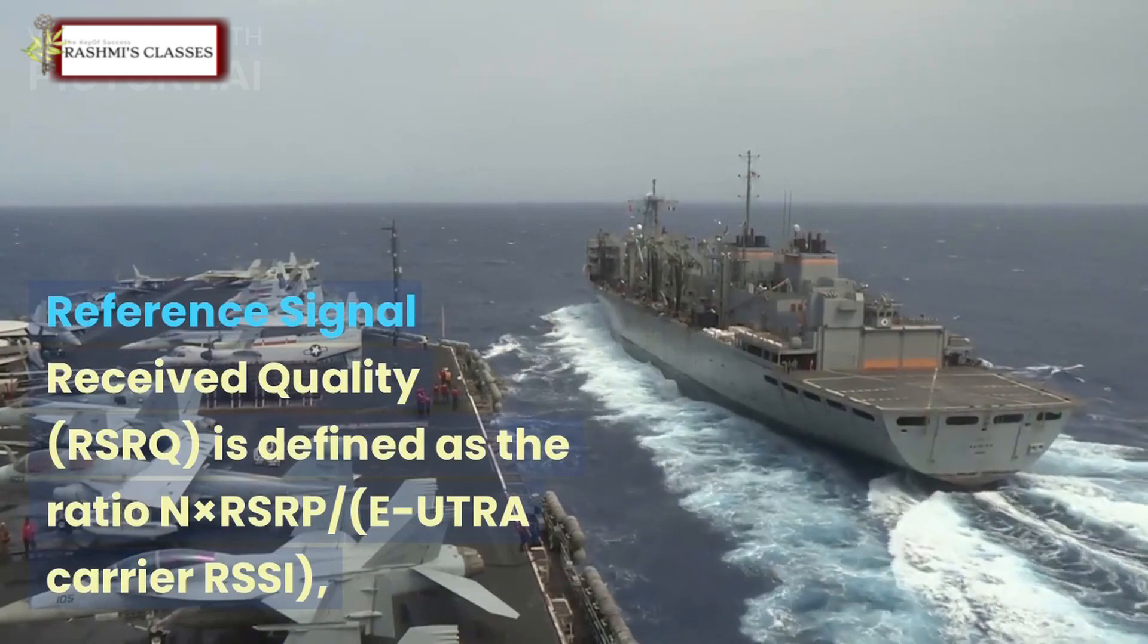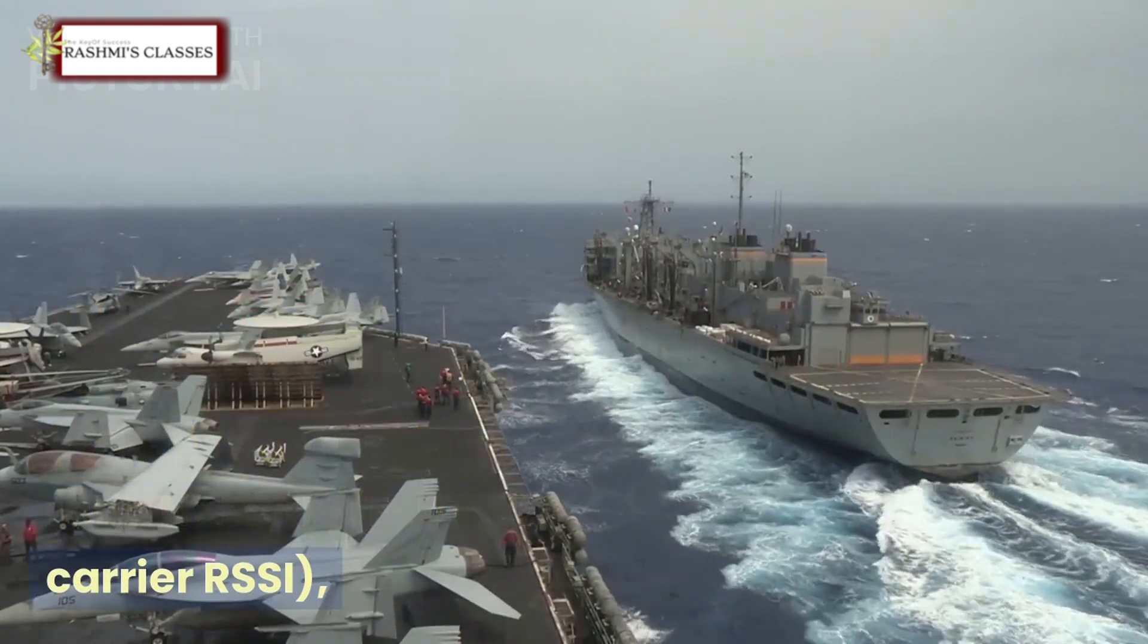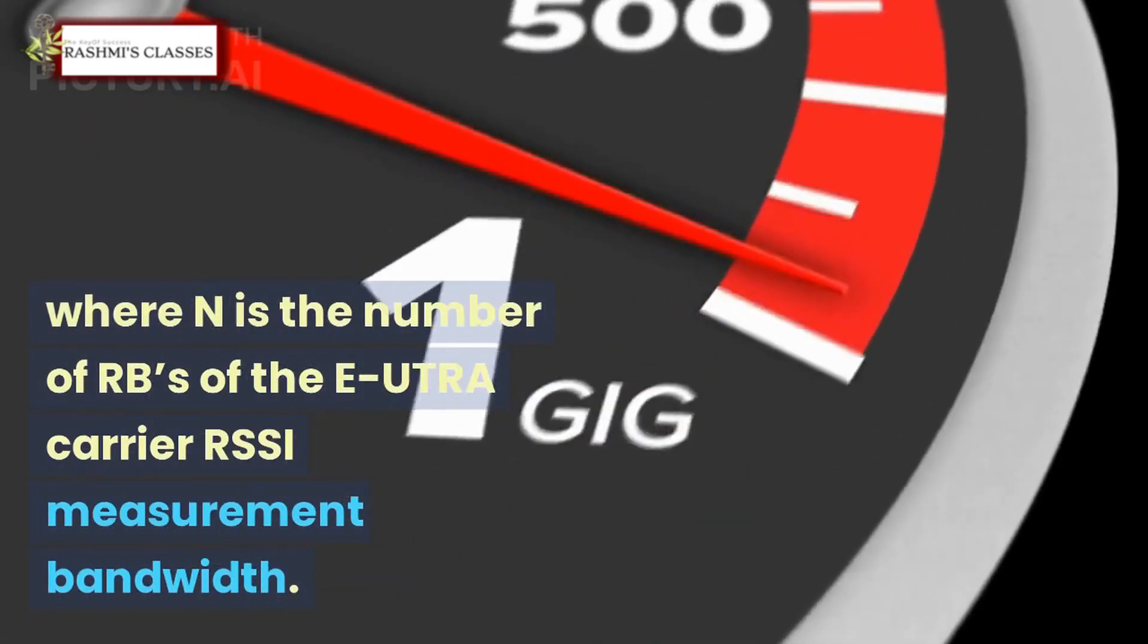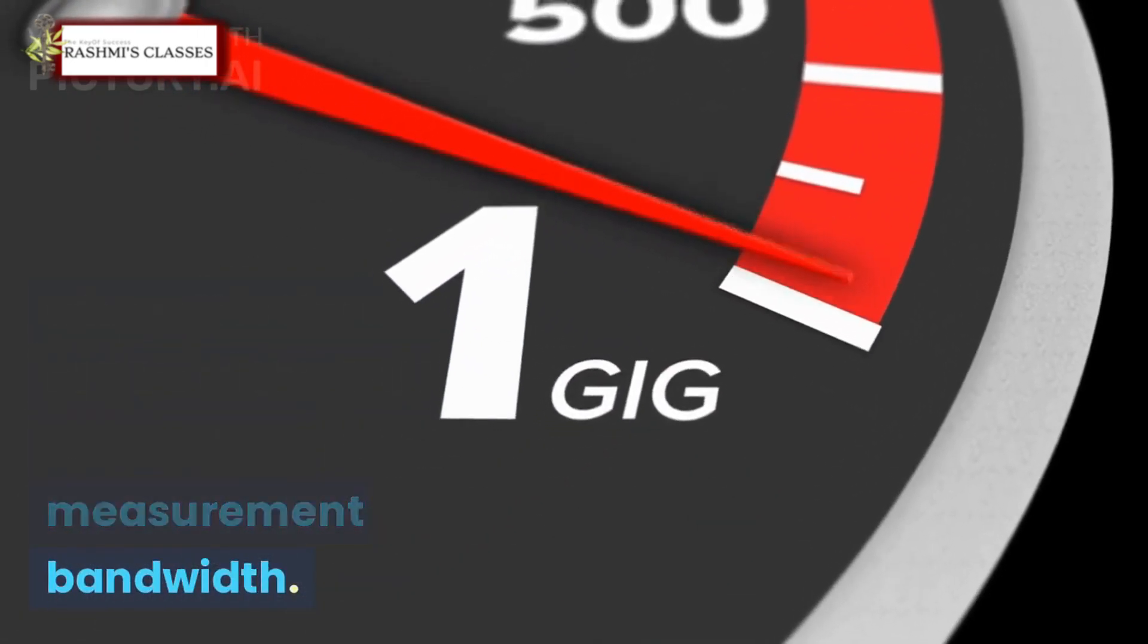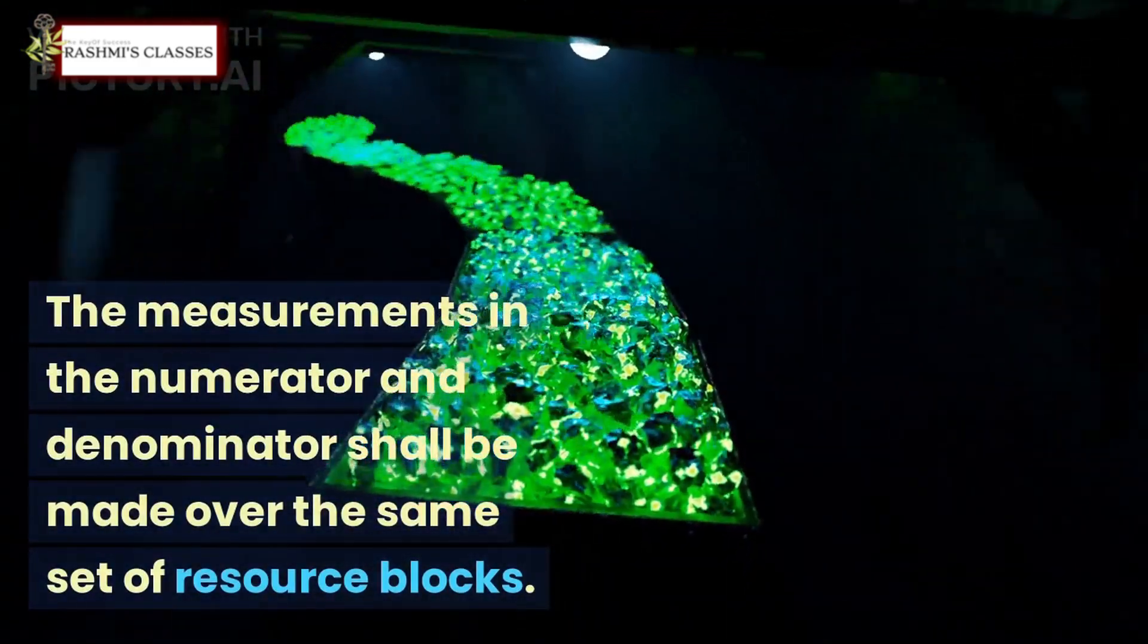Where N is the number of RBs of the E-UTRA carrier RSSI measurement bandwidth. The measurements in the numerator and denominator shall be made over the same set of resource blocks.